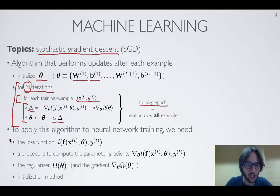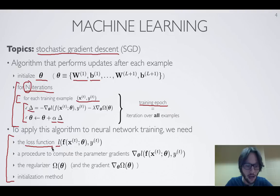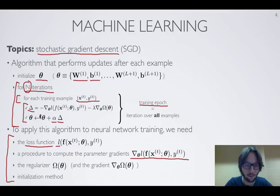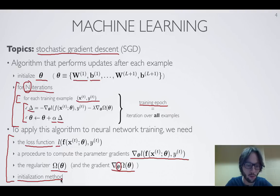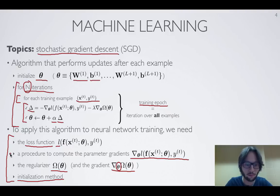To apply stochastic gradient descent, we need several ingredients. First, we need to define the loss function l. Second, we need an efficient procedure for computing the gradients, since we'll be computing them frequently. Third, we need to choose a particular form for the regularizer and compute its gradient with respect to theta. Finally, we need a way of initializing the parameters. In the next video, we'll go over all of these ingredients so that we have everything needed to apply stochastic gradient descent and train a neural network.